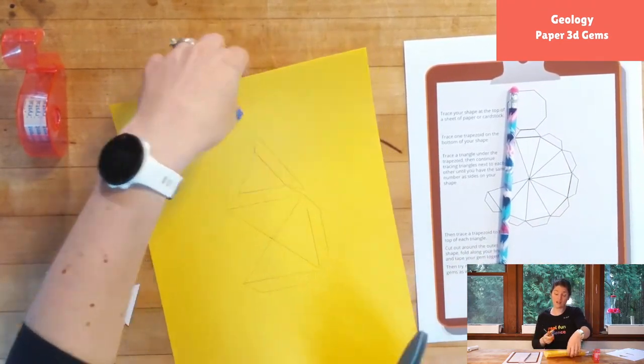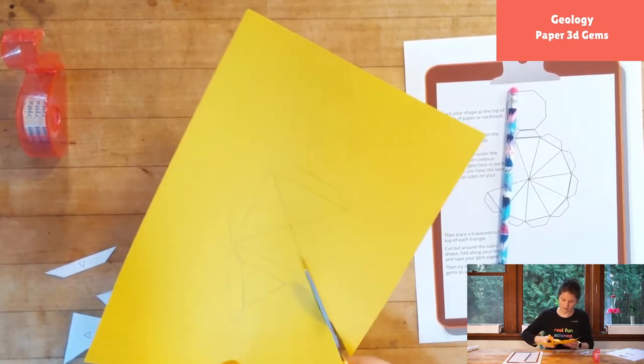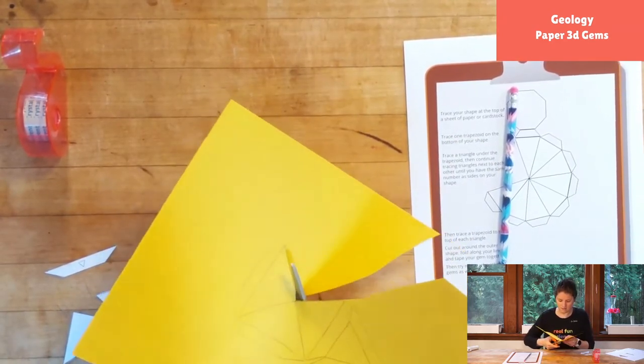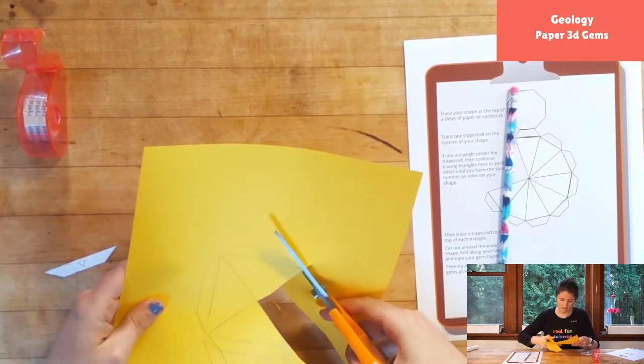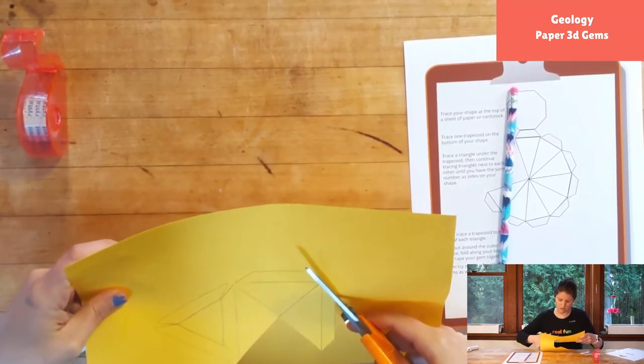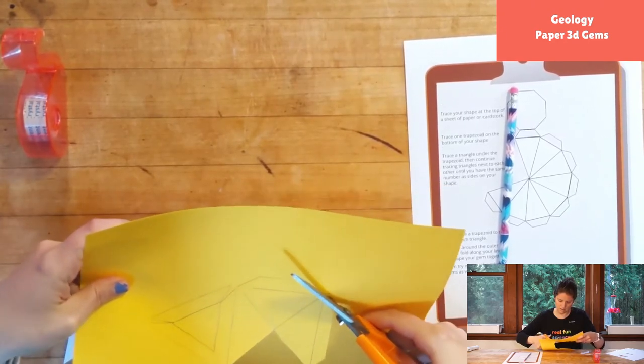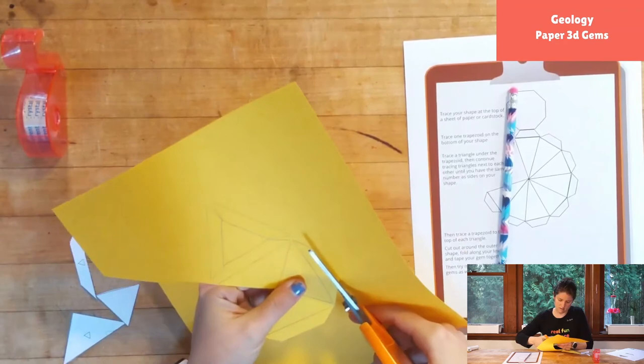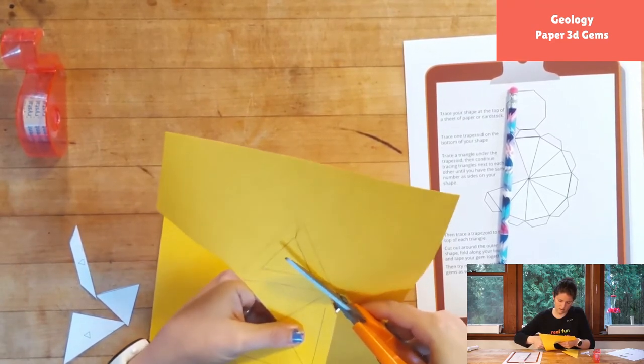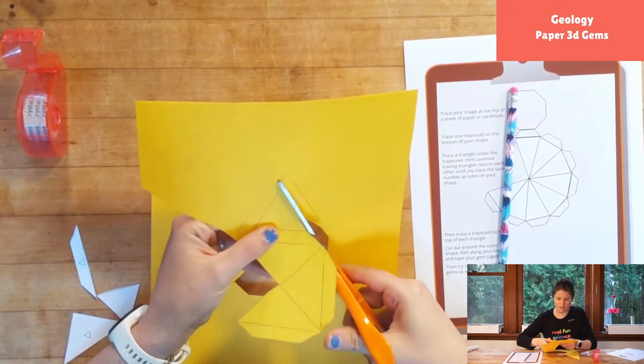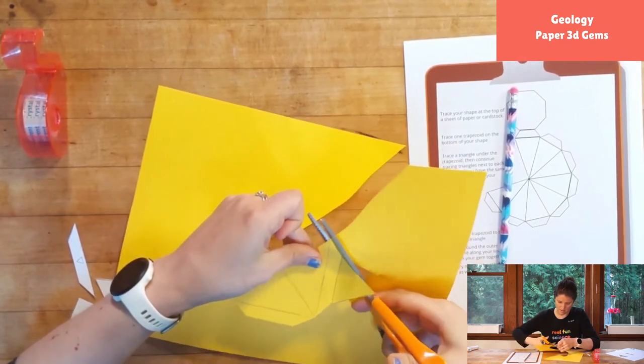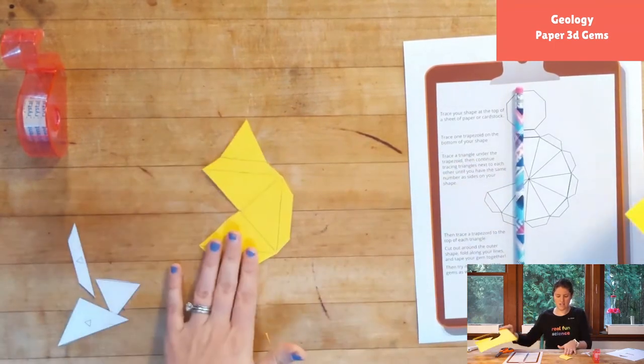All right, so now I'm going to cut out my gem. So I'll cut this guy out and you're just going to cut out along the very outside lines of everything. So I don't want to cut on those inside lines I traced. Those I will fold on in just a moment to sort of create my gem. Although I am going to cut these little trapezoids off that I'm not going to need anymore. All right, so now I have my gem that's cut out.